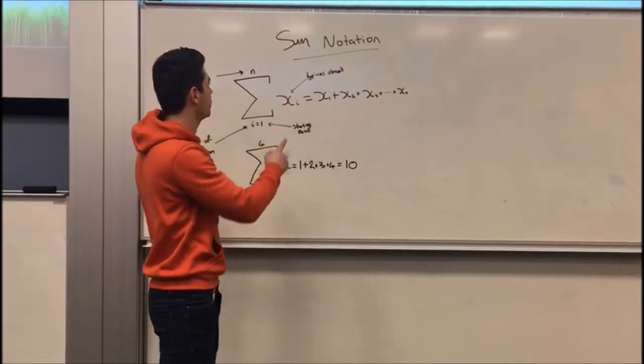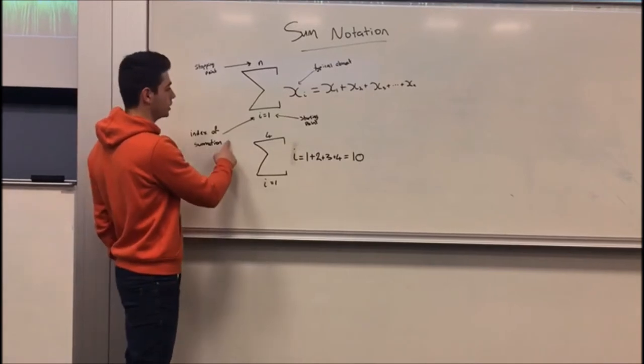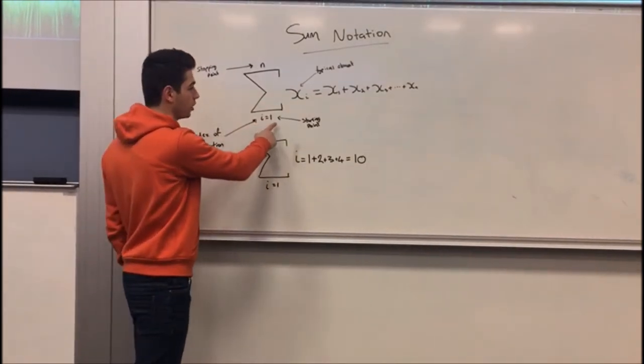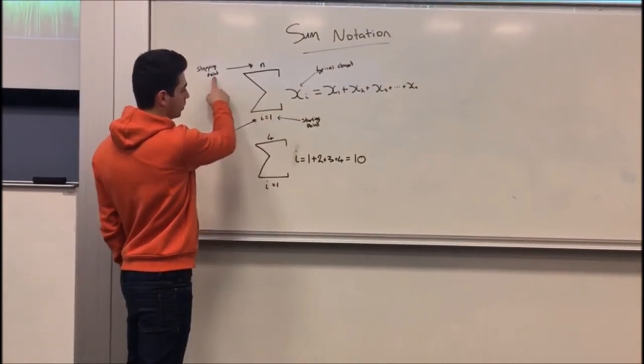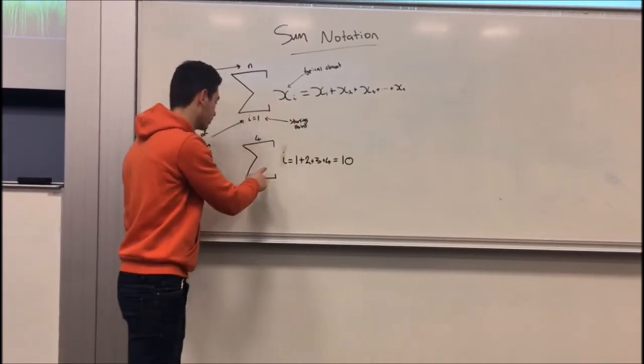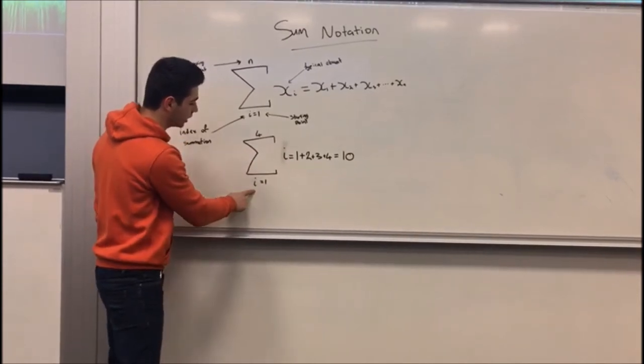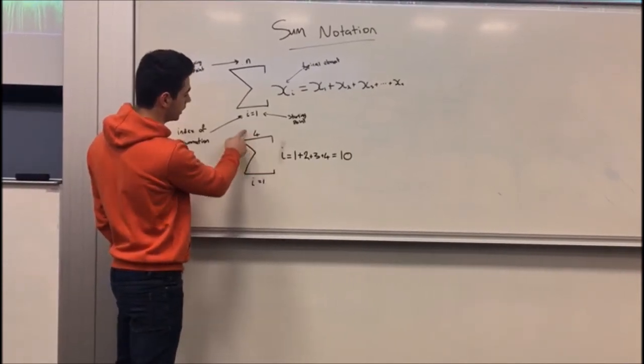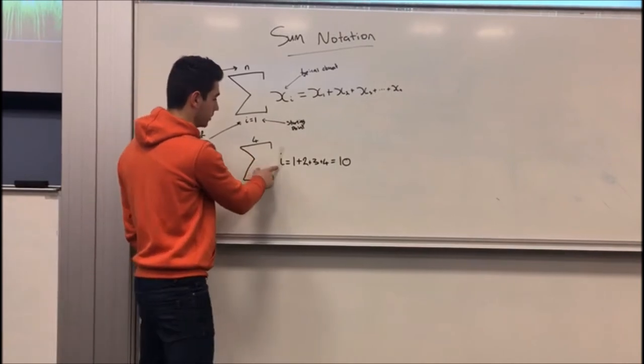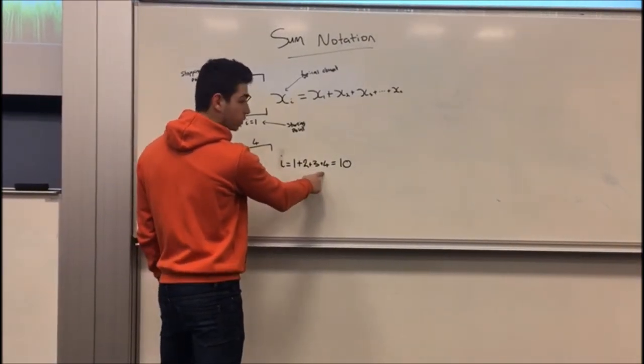Summation notation makes use of the Greek letter sigma. It has an index of summation which we're using i, it has a starting point and then it has a stopping point as well, and then it also has a typical element. For example, with this over here we have the summation sign sigma, and then we've got i which starts from 1 and then ends at 4. And then we're summing i from 1 to 4 so it's 1 plus 2 plus 3 plus 4 which equals 10.